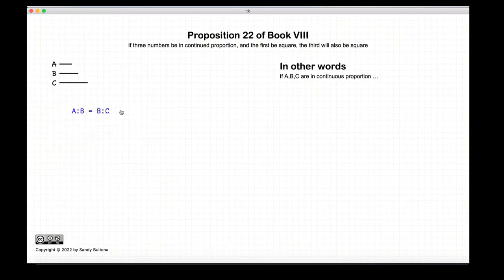This proposition states that if we have three numbers, a, b, and c, that are in continuous proportion, and if a is a square, then c is also a square.